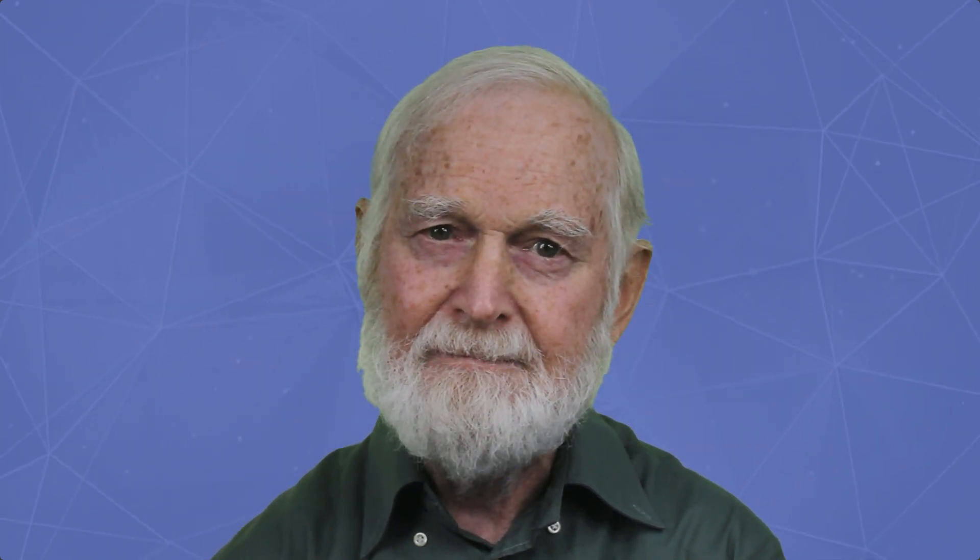The fringe shifts agreed with this. Michelson concluded that the aether exists, and c plus v is not equal to c minus v — light does not always strike an observer with the velocity c. Einstein seems to have never commented on these experiments.